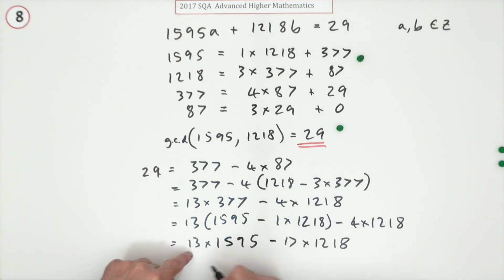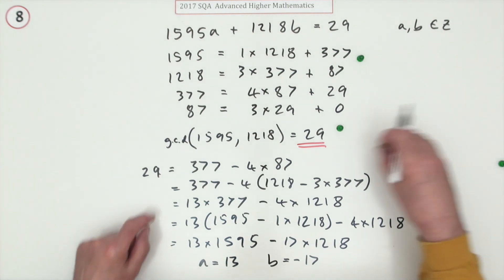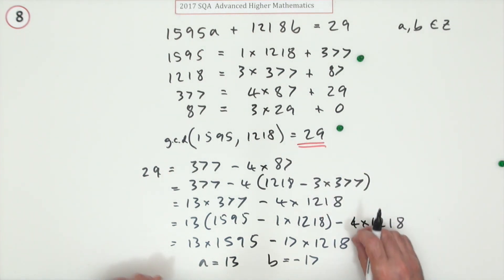Making a equal to 13 and b equal to negative 17. Now the remaining two marks seem to imply you had to go all the way through that to get to this, and the final mark was for stating the values of a and b.